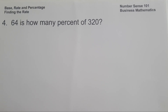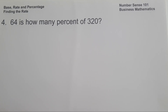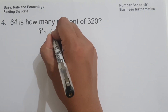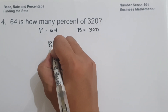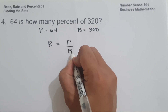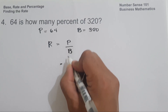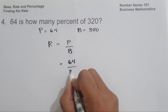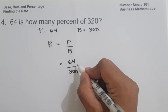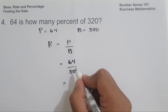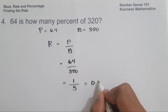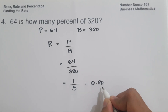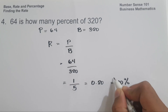On example number 4: 64 is how many percent of 320? To solve, let us identify our given first. Percentage is 64, and base is 320. Using the formula — rate equals percentage divided by base — we have 64 over 320. Since 64 and 320 are divisible by 64, so 64 becomes 1 and 320 becomes 5. And 1 divided by 5 is 0.20. Written in percentage, this is 20%. And this will be our answer.